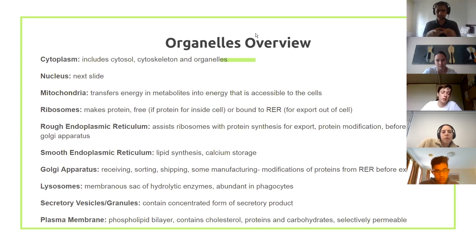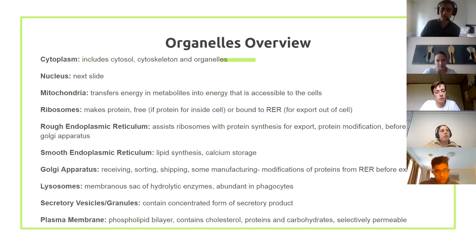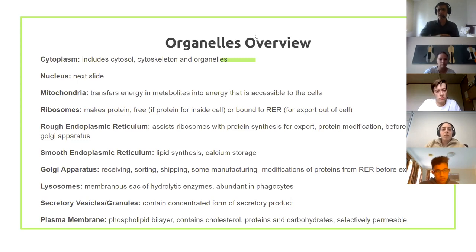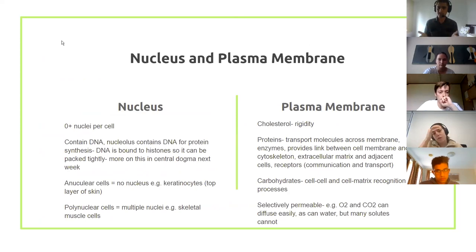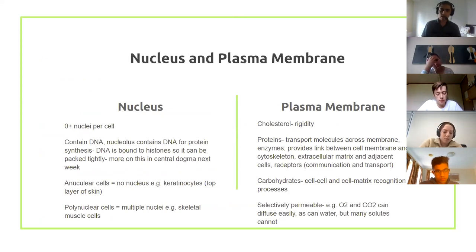Lysosomes are found mainly in phagocytotic cells — they're enzyme-filled sacs that destroy engulfed bacteria and other material. Secretory vesicles are like envelopes that package materials for export. The plasma membrane is the security guard around the entire cell, controlling what goes in and out. We'll go into more detail about the nucleus and the plasma membrane because they're really important.